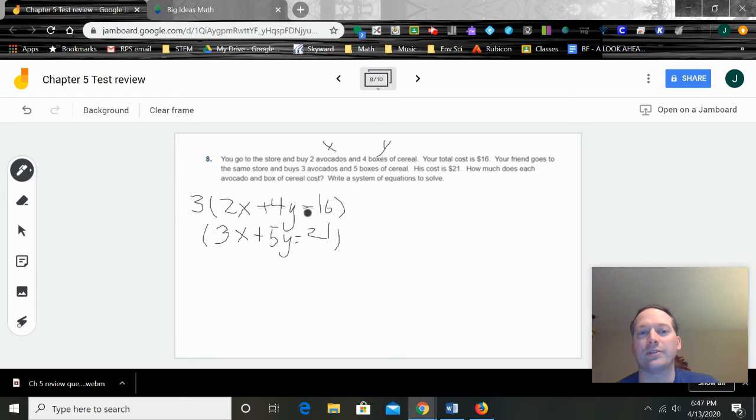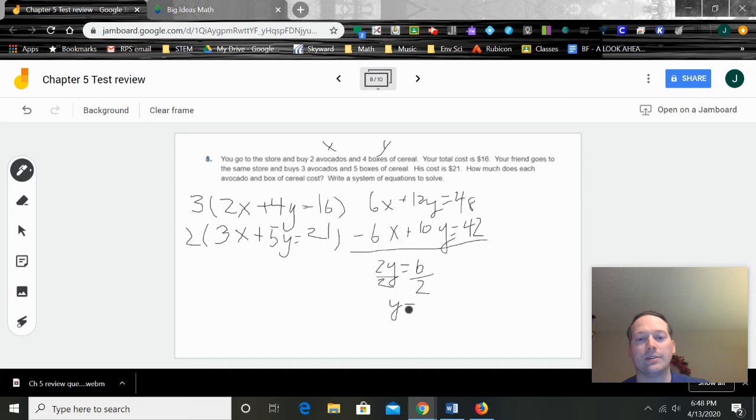So in order for me to get six x's, I need to multiply the first equation by three. And to get six x's in the second equation, I need to multiply it all by two. So now let's distribute through. Three times two x is six x. Three times four y is 12 y. And 16 times three is 48. Two times three is six x. Two times five y is 10 y. And two times 21 is 42. So I got six x's and six x's. So obviously I'm going to subtract them to get rid of the six x. So six x minus six x is zero. 12 y minus 10 y is 2 y. And 48 minus 42 is six.